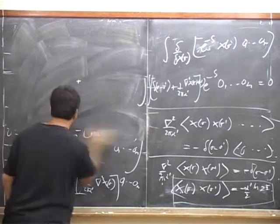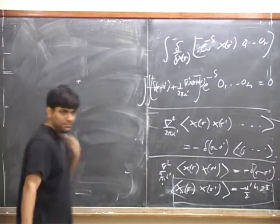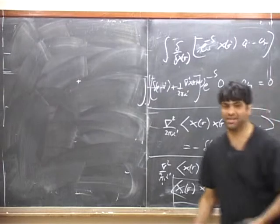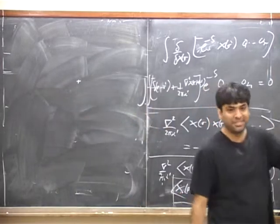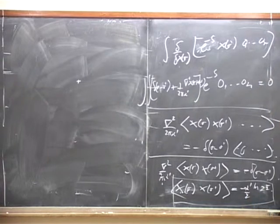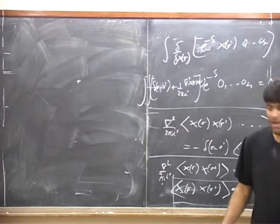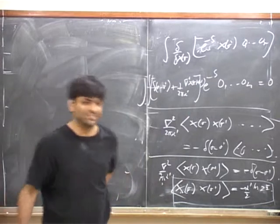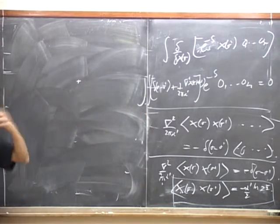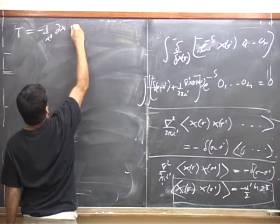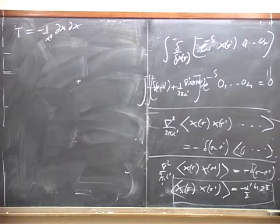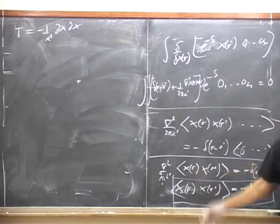Now the next question we need to ask is: what is the stress tensor? As we know, the stress tensor plays a very important role here. In the beginning of string theory, you remember the stress tensor is simply the constraint equations. And you remember that T_{zz} = del X · del X and T_{z-bar z-bar} = del-bar X · del-bar X — though we need to get the constants right. The grand result is T = minus (1/α') del X del X, and similarly for the anti-holomorphic part.